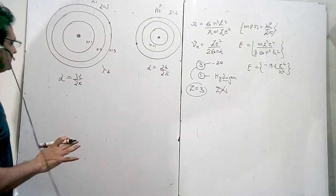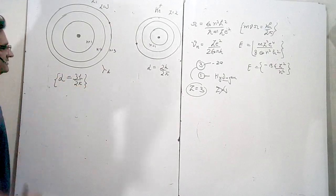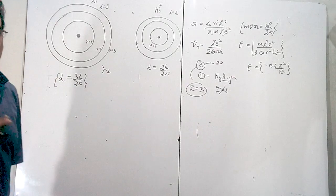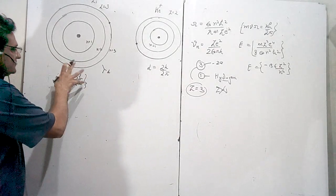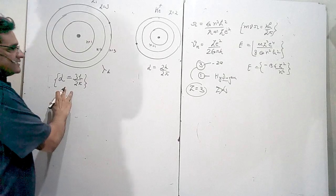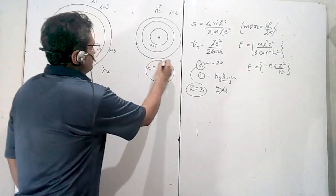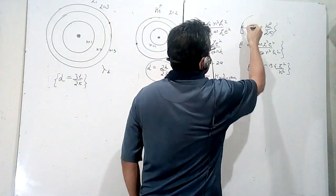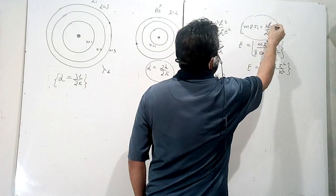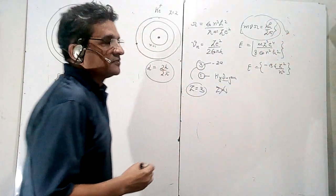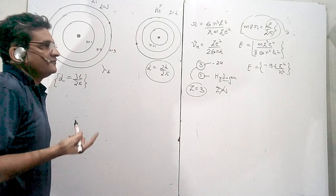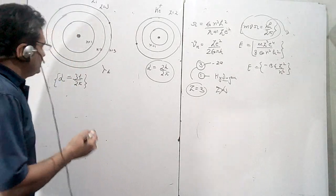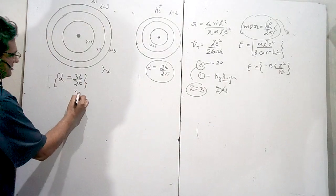The electron in lithium is in such an orbit that its angular momentum is given as 3h/2π, and for helium it is 2h/2π. Recalling the quantization formula — mvr = nh/2π — where n represents the orbit number: if n = 1, mvr = h/2π; if n = 2, mvr = 2h/2π. So for lithium n = 3, and for helium n = 2. We need to find the ratio of their de Broglie wavelengths.